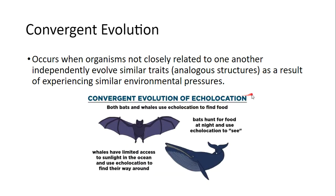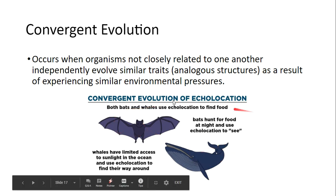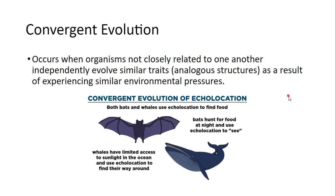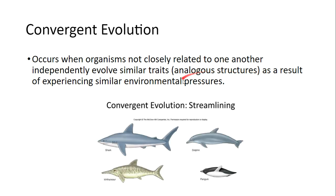Convergent evolution of echolocation: bats and whales are not closely related, but they developed a similar trait of echolocation because of similar environmental pressures — bats hunting at night, blue whales hunting deep in the ocean where there is less light. Another example of convergent evolution is the streamlined bodies of aquatic organisms — the shark, the dolphin, penguins, and the ichthyosaurus, a dinosaur that has gone extinct.